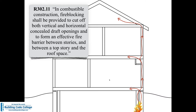R302.11 will tell us what fire blocking is — it's incombustible construction. Fire blocking shall be provided to cut off both vertical and horizontal concealed draft openings and to form an effective fire barrier between stories and between a top story and the roof space. What fire blocking does is put stopping points to stop hot gas from running through and compartmentalize that concealed fire. Hopefully a concealed fire in the basement will be compartmentalized and will breach the wall covering and set off the smoke alarms before it has traveled all the way up to the attic. That's about buying time for escape.